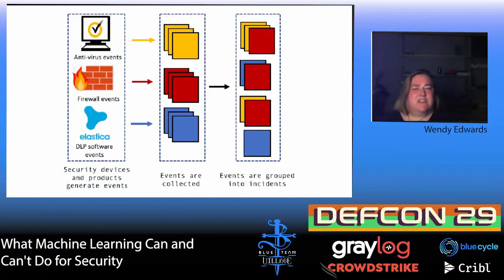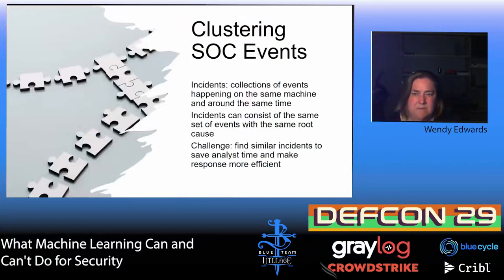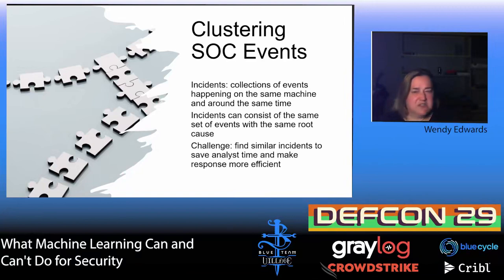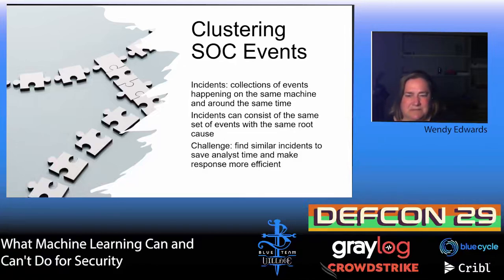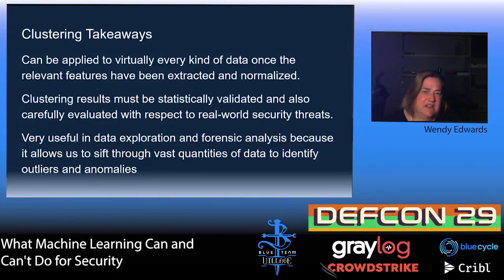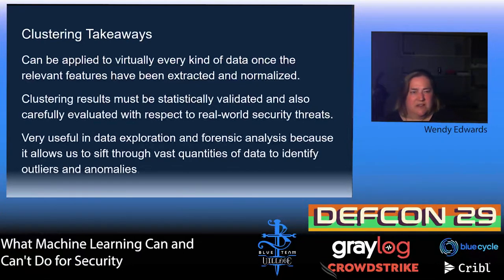In a SOC you're going to have a lot of disparate inputs coming from different sources — you'll collect all your sources and then group them into incidents. An incident is basically a collection of events happening on the same machine at the same time, possibly with the same root cause. You can find similar incidents, maybe not on the same machine but across the network. That could save the SOC analyst a lot of time, because SOC analysts often spend their time doing very tedious work. Clustering takeaways: you can apply it to many kinds of data, you need some statistical validation, and it's very useful when you have a large volume of data to sift through efficiently.